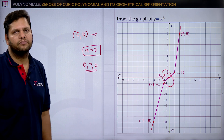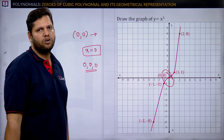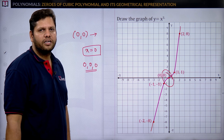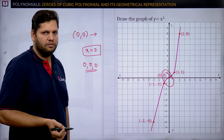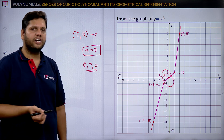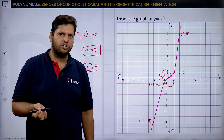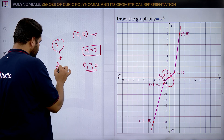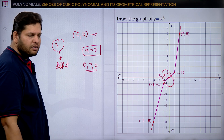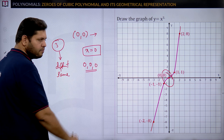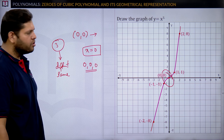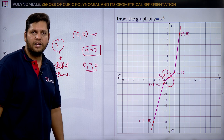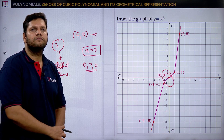The curve intersects the x-axis at exactly one point, but the cubic polynomial must have three zeros. So we can say there is one zero that is repeating. The three zeros are all equal to zero. Three zeros may be all different, or all the same, as in this case.